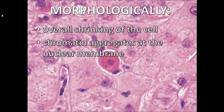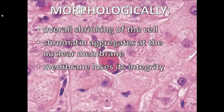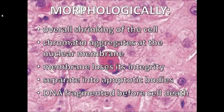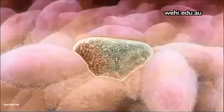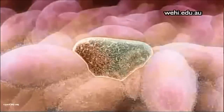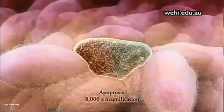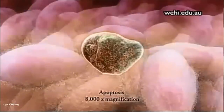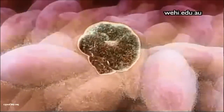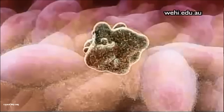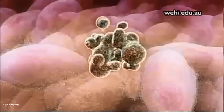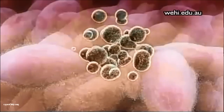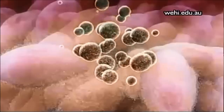Upon signalling for apoptosis, chromatin aggregates at the nuclear membrane and the membrane loses its integrity, allowing the membrane to shrink and the cell to separate into apoptotic bodies. DNA in apoptotic cells is non-random and is fragmented before cell death. This only affects individual cells in response to physiological stimuli and does not result in an immune response.